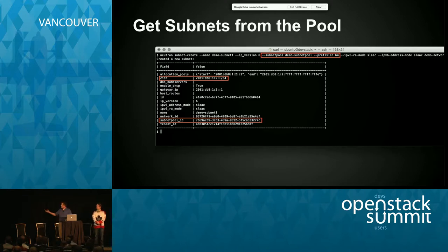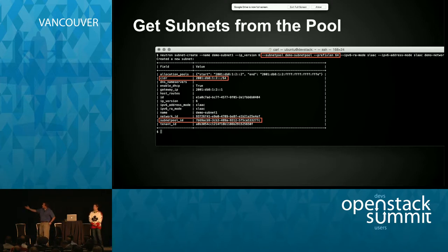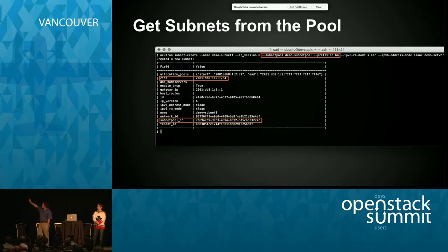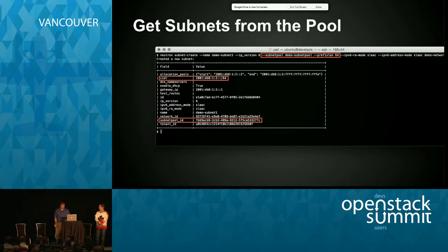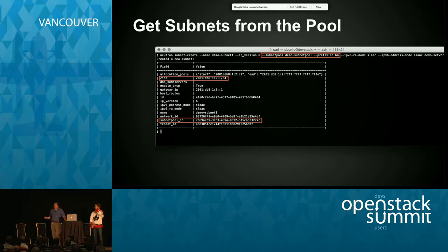Here's what it looks like — we currently only have Neutron command line support for it. We've got a neutron subnet create, and the important parts highlighted in red show there's no subnet details on the command line, just dash-dash subnet pool — I use 'demo subnet pool' as the name — with a prefix length, and it creates it with something allocated from the pool. The subnet pool ID is recorded with the subnet, and that becomes important a bit later.